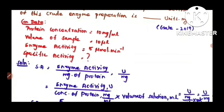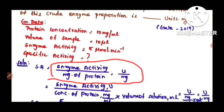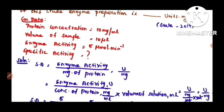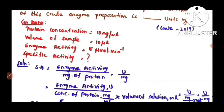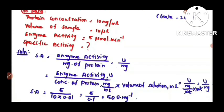The formula for specific activity is: specific activity equals enzyme activity divided by mg of protein, and the unit is U per mg. In the previous problem, the protein concentration was given directly in mg. But in this problem, the protein concentration is given as 10 mg per ml. So if you put the concentration directly, you will get an extra term in the unit — U per mg per ml.